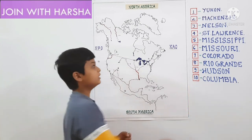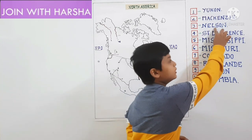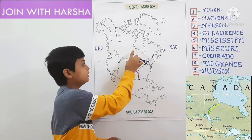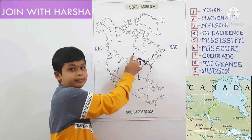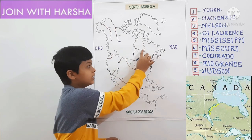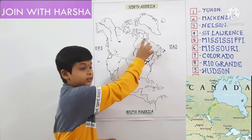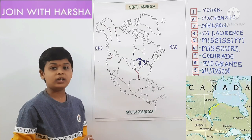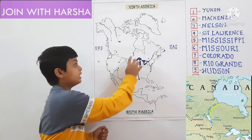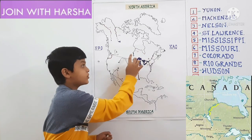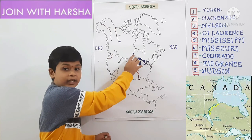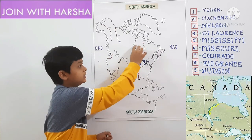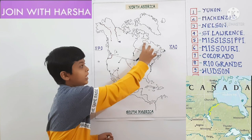Third one is Nelson River. Nelson River source is Lake Winnipeg. Within Hudson Bay, there is another small bay called James Bay. Nelson River flows towards North and drains in Hudson Bay.